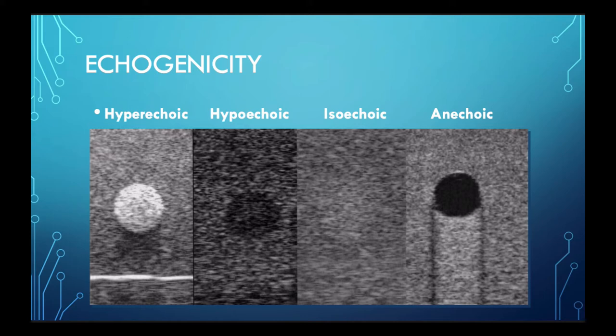On the far right side of the screen, we have structures that allow the sound waves to pass through them and don't reflect back as fiercely. These are often fluid-filled structures — structures like vein, structures like the eyeball, structures like the bladder. Anything that has fluid inside it will end up looking black on the screen, and we call that anechoic. And then we have hypoechoic and isoechoic, which are kind of in the middle there.